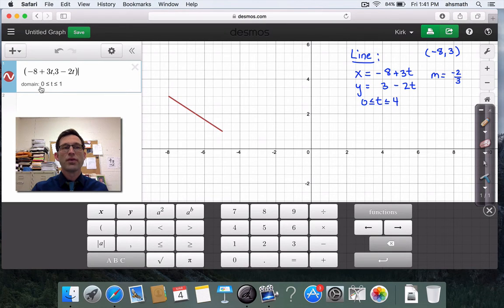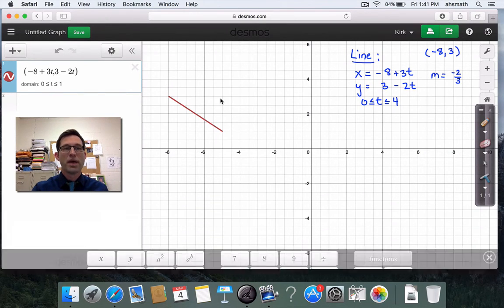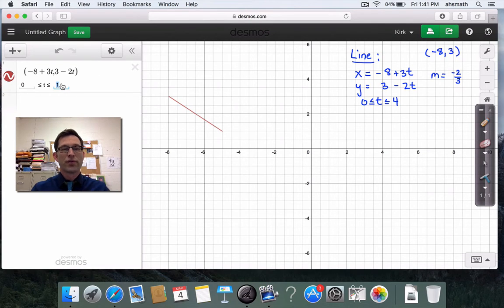Now, I'm going to put in 3 minus 2t for y. And notice down here, my domain for t has already showed up. And of course, my domain is 0 to 4. And there's my line.